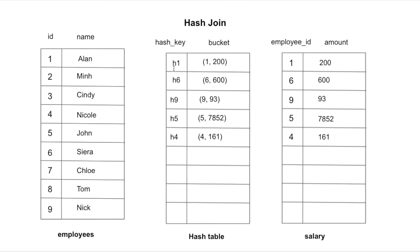It checks if h2 is in the hash table — it's not, so it moves on to the third record. It generates hash key h3 for id three, and h3 is not in the hash table either. For the fourth record, it generates h4, which does exist in the hash table, so it returns the fourth employees record along with the salary record in the bucket at h4. This process repeats until the sequential scan on the employees table is complete.